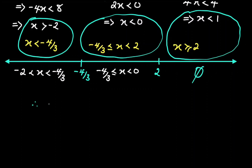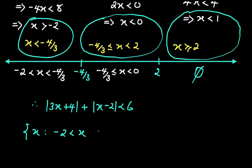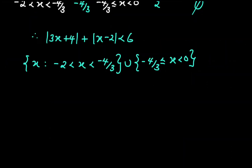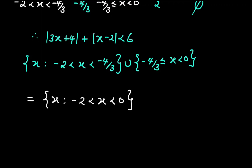Therefore, the set of values of x for which the absolute value of 3x plus 4 plus the absolute value of x minus 2 is less than 6 is given by: x such that negative 2 is less than x less than negative 4 over 3, union negative 4 over 3 less than or equal to x less than 0. This includes all numbers between negative 2 and 0, so the final answer is x such that negative 2 is less than x less than 0. Thanks for watching — please like this video and subscribe to this channel. Stay blessed and see you in the next video.